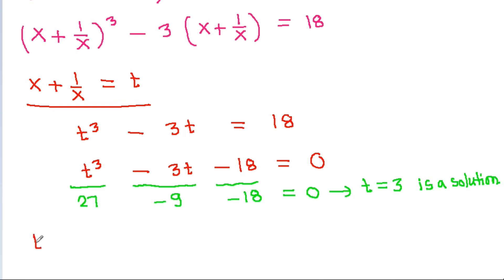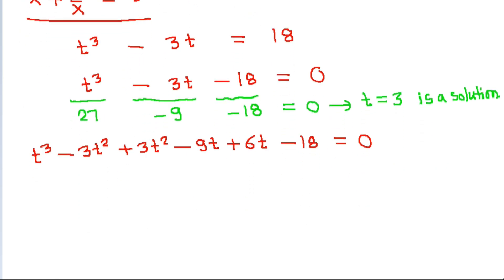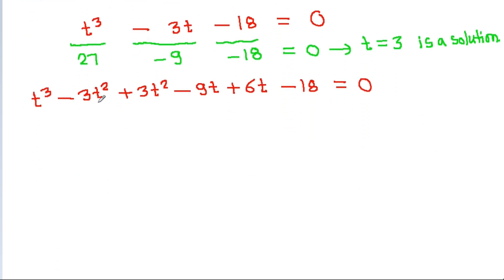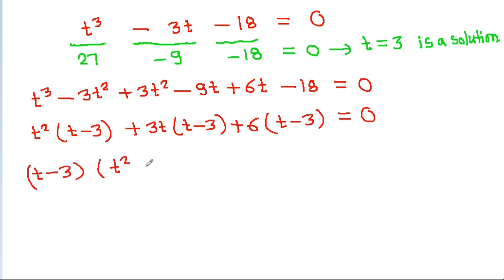So we factor out t minus 3 from t cubed minus 3t minus 18. Taking t minus 3 common, we get t squared plus 3t plus 6 equal to 0 as the remaining factor.